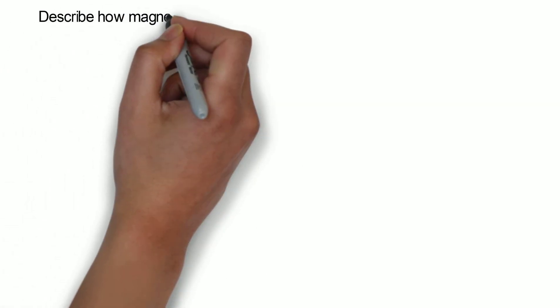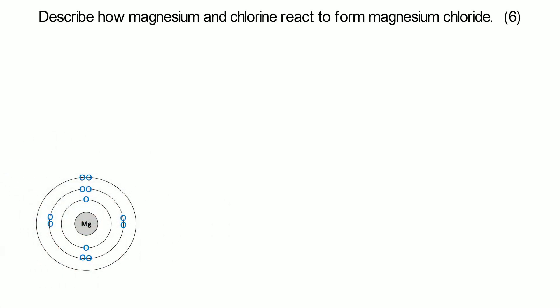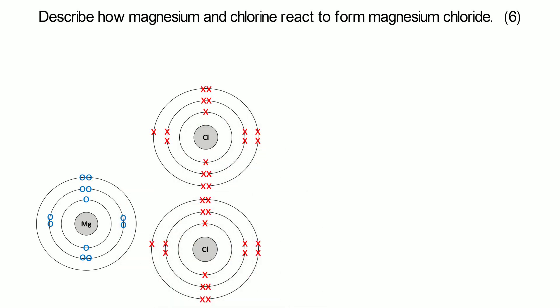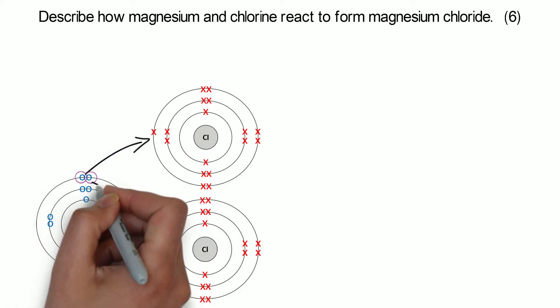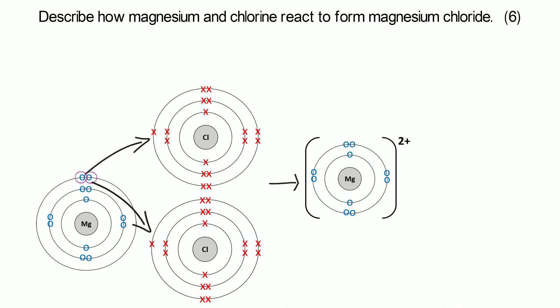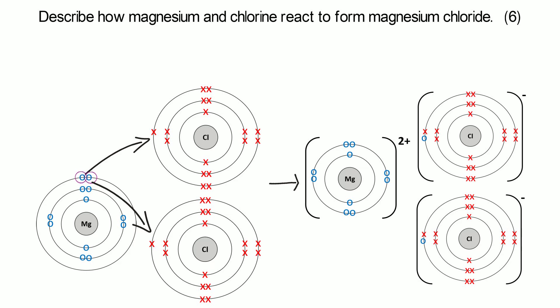Now we're still looking at magnesium, but instead of oxygen we're going to think about chlorine. Magnesium is in group two — same as before — it has two electrons in its outer shell and wants to lose those. Chlorine is in group seven so it wants to gain an extra electron. The problem is magnesium has two electrons to lose but chlorine only has room for one, so we actually need two chlorine atoms. One of magnesium's electrons goes to the first chlorine atom and the second electron goes to the second chlorine atom.